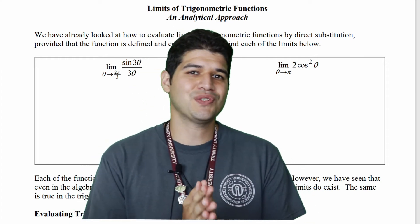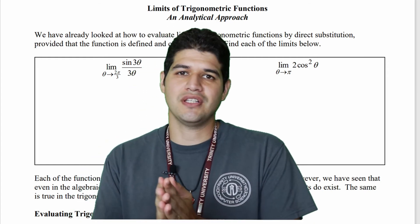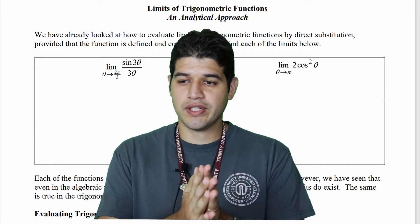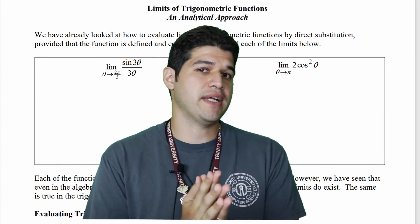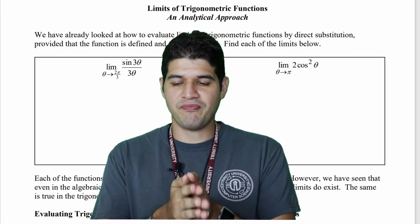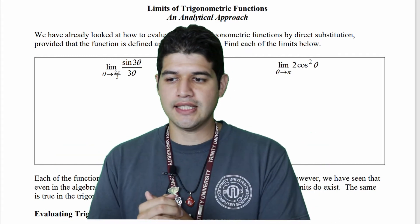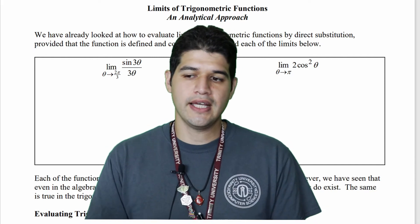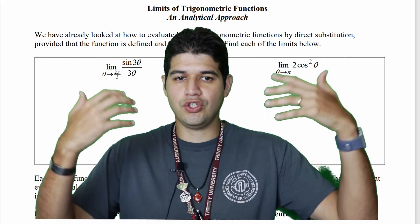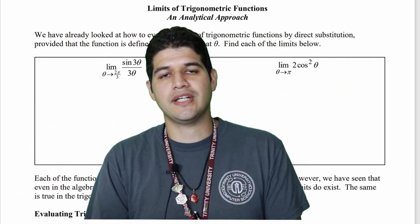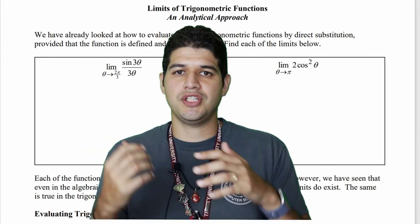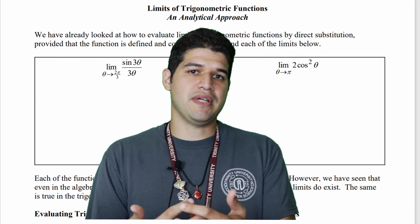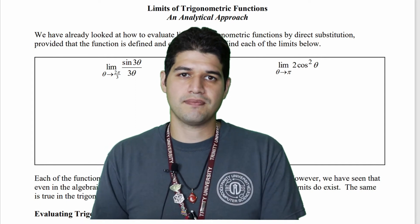Hello students, welcome back to another AP Calculus lesson with Mr. Hernandez. In this lesson, we're going to be looking at limits of trigonometric functions. In this first video of this three-part series, we're going to look at how you can rewrite some functions using identities and factoring to make them easier to work with so that you can find values of those limits. So let's get into it.